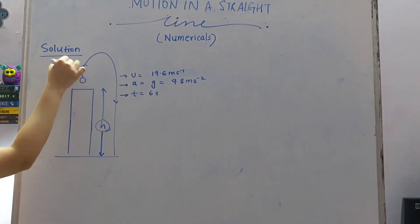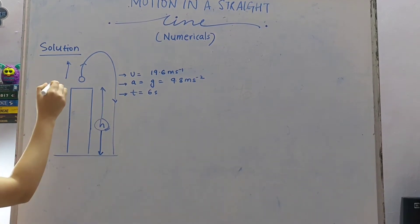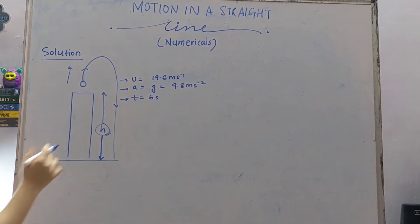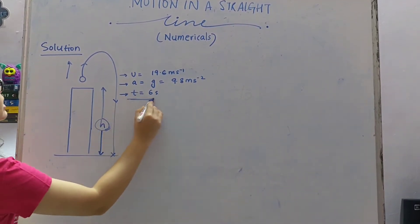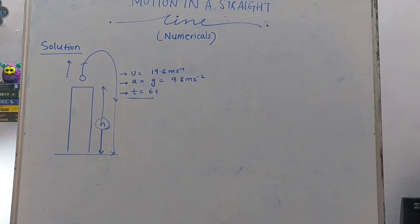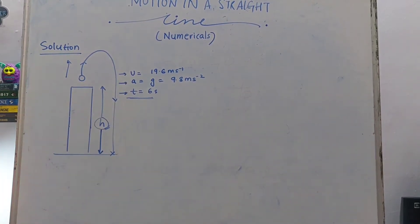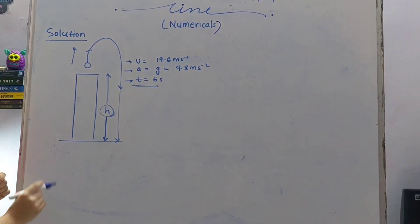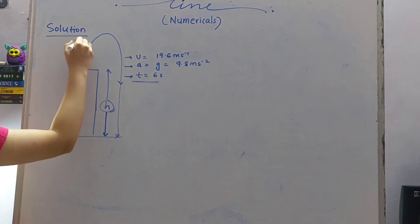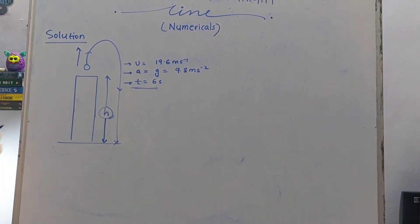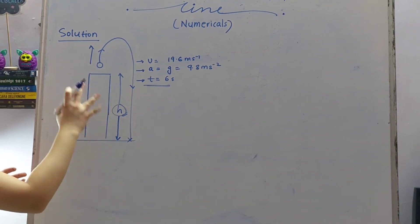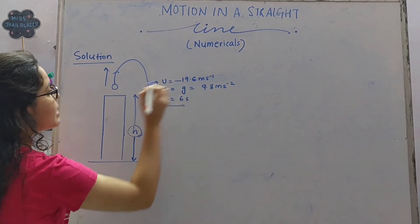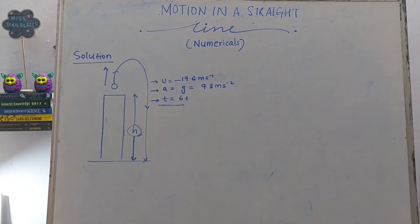A ball is thrown vertically upwards with an initial velocity 19.6 meter per second, and it reaches the earth back in time 6 seconds. Now let us analyze what is given to us. So it is given that it is thrown up with a velocity 19.6 meter per second. But remember, it is being thrown up against gravity. Whenever one force goes against another force, we always take that value to be negative. So it will be minus 19.6 meter per second.